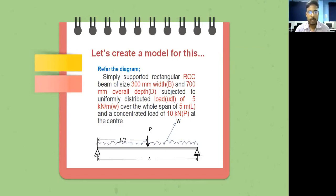You have a problem: it is a simply supported rectangular RCC beam of size 300 mm width and 700 mm overall depth, subjected to a uniformly distributed load of 5 kN per meter over the whole span of 5 meters. There is also a concentrated load of 10 kN acting at the center. Let's model this using the StartPro software.